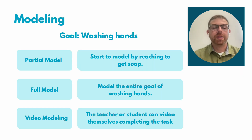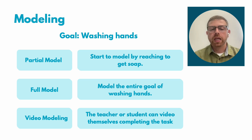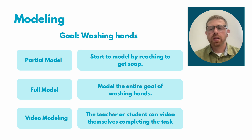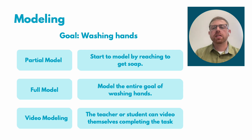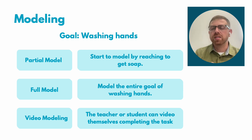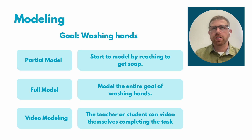The next prompt type we're going to talk about is a model prompt, which is a type of response prompt. Our goal for this example is washing hands. Just like verbal prompts, we can have various levels of intrusiveness for this specific prompt — an indirect, a partial, and a full. A full is considered more intrusive, giving the full desired response, whereas a partial is less so.